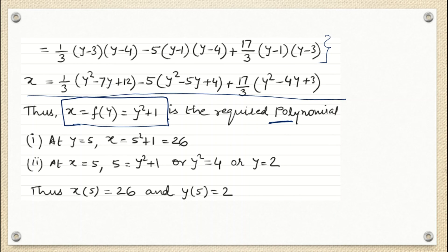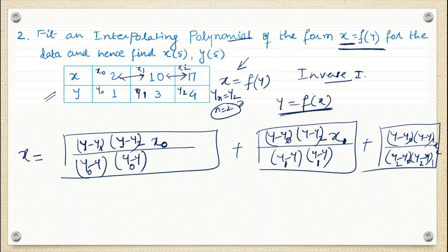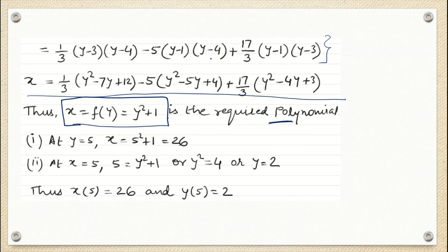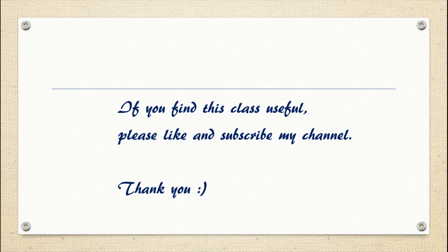Now we substitute values into this polynomial. At y equals 5: x equals 25 plus 1 equals 26. At x equals 5: substituting into the left-hand side, y² equals 4, so y equals 2 (taking the positive value). Therefore x at y equals 5 is 26, and y at x equals 5 is 2. If you find this class useful, please like and subscribe to my channel. Thank you.